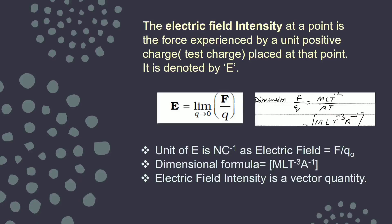We use bold symbols to show that electric field is a vector quantity, and its direction is the same as that of the electrostatic force. If Coulomb's law and electrostatic force are clear, then field is no problem. SI units are newton per coulomb (N/C). For the dimensional formula: F has dimensions MLT⁻², charge has dimensions AT, so the dimensional formula for electric field is MLT⁻³A⁻¹. It is a vector quantity and its direction is the same as that of force.